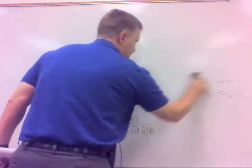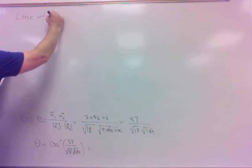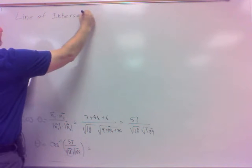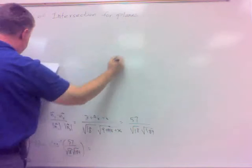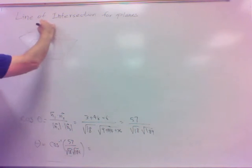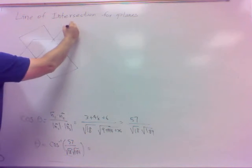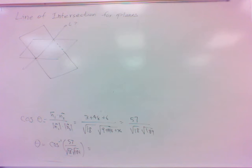Alright, one other thing on section 12.5 I thought I should mention is how do we find that line of intersection for the planes, for two intersecting planes. Same idea, except now we want not the angle but we want this line here of intersection. What's that line?